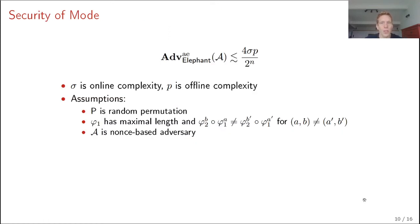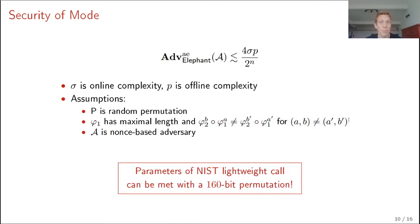For security, we proved that the Elephant mode is secure against any adversary. Secure up to bound 4 times sigma times P divided by 2 to the n. Where n is the permutation size. And we consider any adversary that makes an online complexity sigma, which counts the number of associated data and plaintext blocks. And offline complexity P, which counts the number of primitive calls. This proof is given under the assumption that P is a random permutation. Phi 1 has a maximal length. And in addition, this condition holds. So we don't have collisions in the masks. For any two values to mask A, B and A' B' that occur in the scheme. And A is assumed to be a nonce-respecting adversary. Most importantly, this proves that we can actually instantiate Elephant with a 160-bit permutation and still meet the parameters required by the NIST lightweight call. And this is not possible with a sponge.